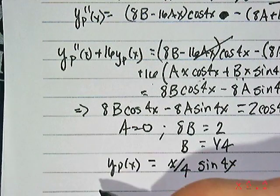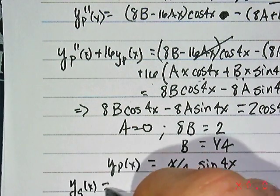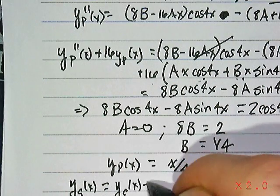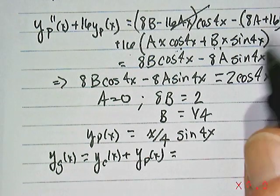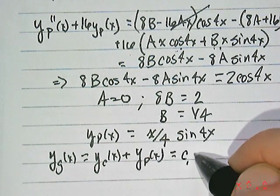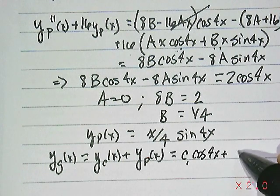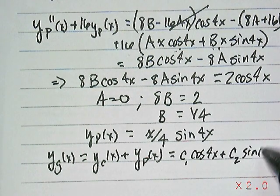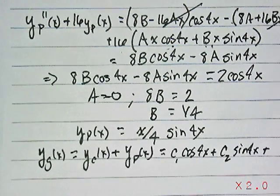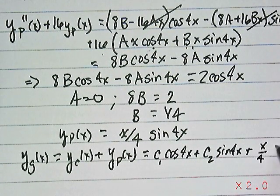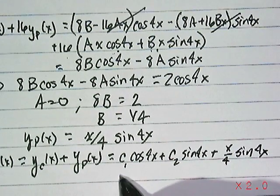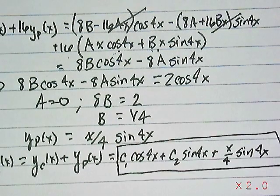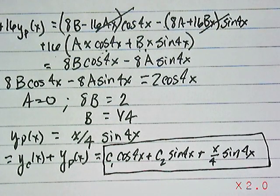So, the general solution, then, if we write it this way, y sub g of x, which is the sum of the complementary solution, plus the particular solution, always the case when we're doing MUC. The answer we should have is c1 cosine 4x, plus c2 sine 4x, plus the particular solution we determined, x over 4, times sine of 4x. And, that is the solution to that second order constant coefficient differential equation, which is non-homogeneous, the right-hand side being 2 cosine 4x.